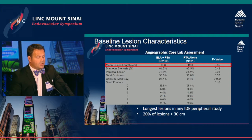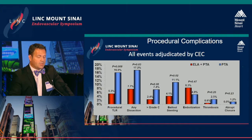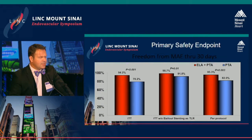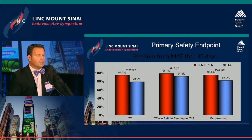In terms of complications, TLR and significant dissection were less with the combination. Bailout stenting was less, and you see non-significant differences in embolization, thrombosis, and closure between the two therapies. In terms of the safety endpoint at 30 days — whether intent-to-treat, intent-to-treat without bailout stenting, or per protocol — you see an advantage for the combination of laser plus PTA versus PTA alone.